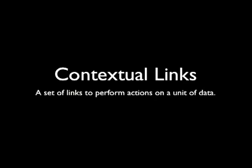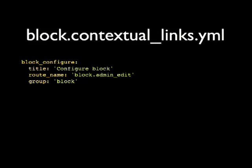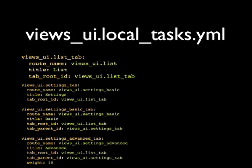Contextual links are the little helpers that pop up on an entity — a block, menu, or piece of content. These will also be defined in YAML, which is not yet in core but coming very soon. You have a route name as a machine name, then a title. They're grouped so you can have them in a specific order, and all of these support weights, so the order of the YAML file doesn't matter — just change the weights.